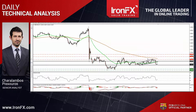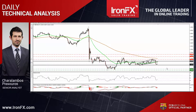Cable tumbled on Thursday after the Bank of England decided to cut its benchmark interest rate by 25 basis points and to expand its QE by 70 billion pounds. The rate fell back below 1.3027 and the decline was stopped slightly above the 1.3070 hurdle. Bearing in mind that the rate is back within the sideways range between 1.3070 and 1.3027, I would switch back to flat with regards to the short-term outlook.